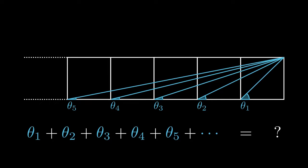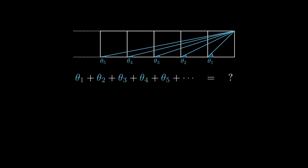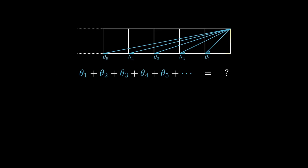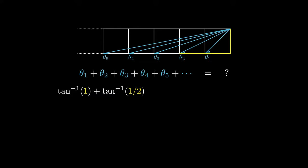We're first going to make some space and consider the first angle. The side opposite theta 1 has length 1, and the side adjacent to theta 1 has length 1. This tells us that theta 1 is the arctangent of 1 divided by 1. For the angle theta 2, the adjacent is not just 1 unit but 2 units, which means that theta 2 is the arctangent of 1 over 2.